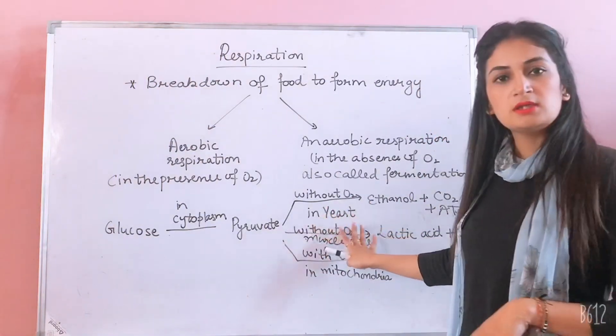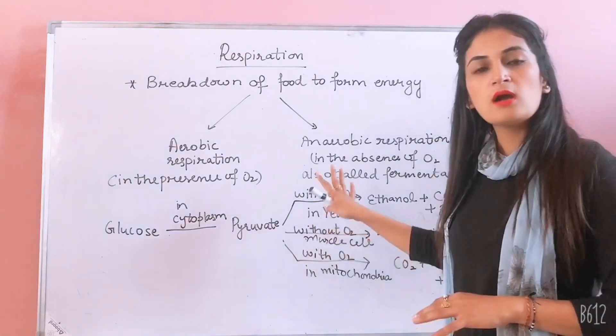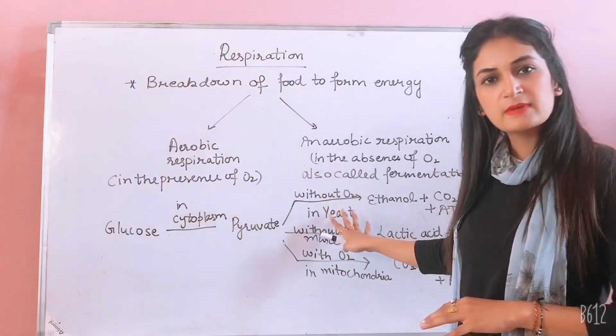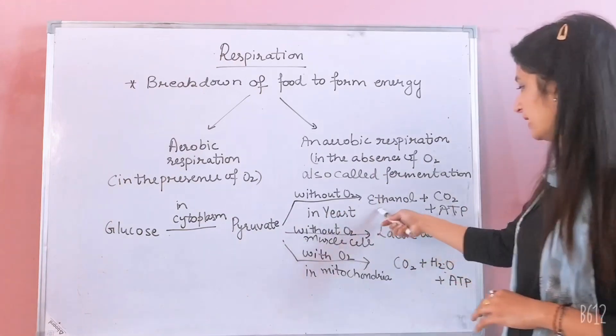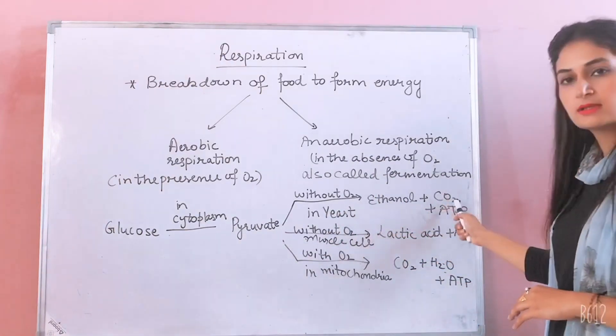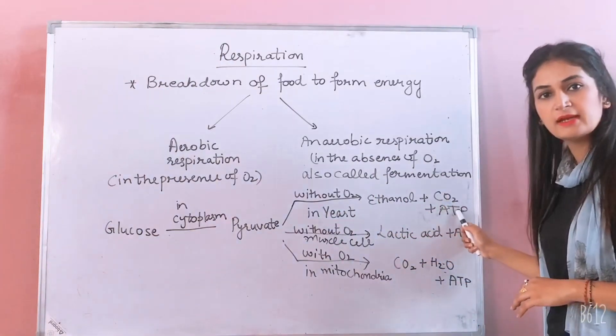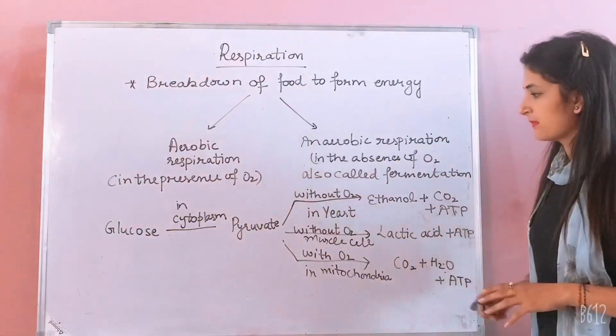So what happened in this cell? Anaerobic respiration. What are the byproducts? Ethanol, carbon dioxide, and ATP.